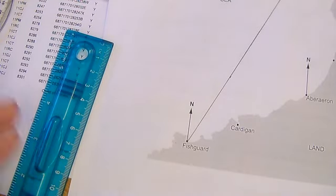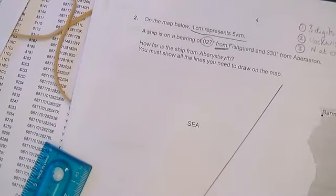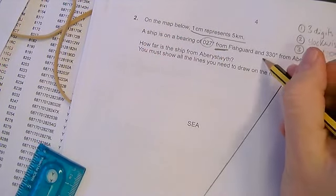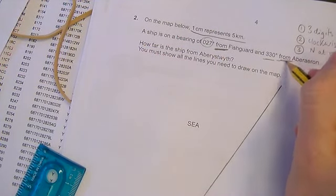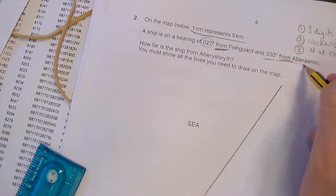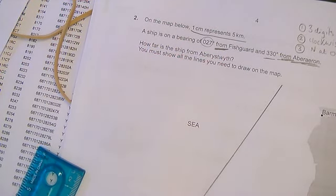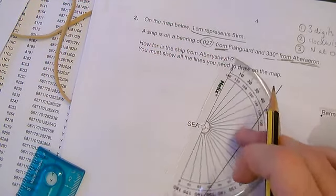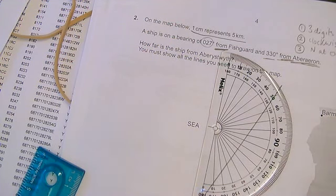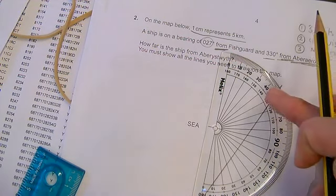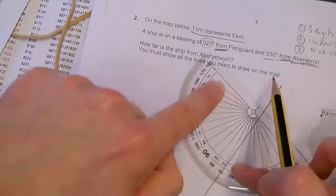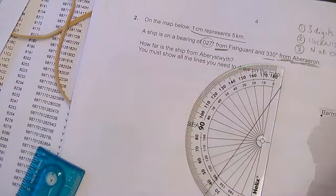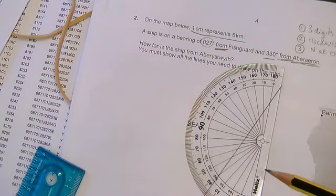The next thing I need to do now is read what the other one was. It said 330 degrees from, so from is where I'm putting my protractor. From Aberaeron. Now, if you have a 180 degrees protractor, that can cause a bit of a problem because obviously it doesn't go up to 330. So there's two options that you can work here. The best one for me would be to turn my protractor around and then carry on counting from 180 this way up until 330.